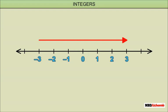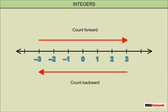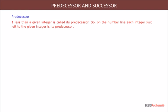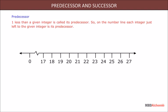Zero is neither a negative nor a positive integer. On the number line, if we count from left to right we count forward, and if we count from right to left we count backward.